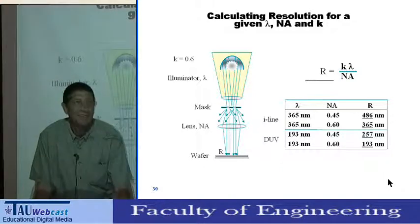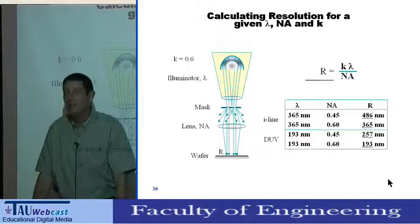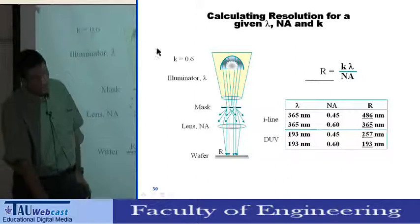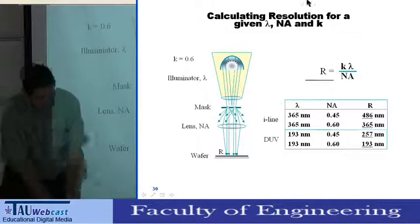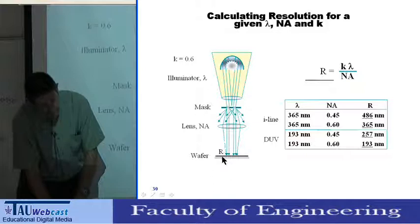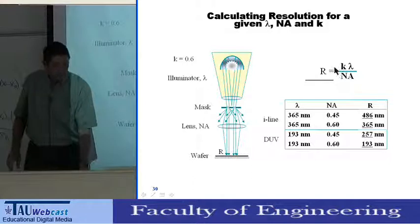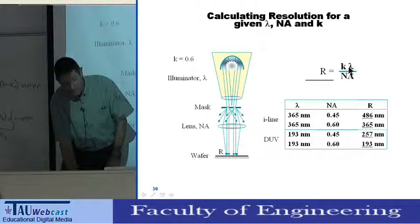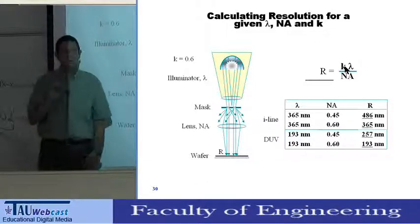Welcome again. We start with the second lecture on nano-micro technology. Last week we started to discuss lithography, and at the end of the lecture I explained to you the calculation and how to calculate resolution. The resolution is defined based on Rayleigh's geometrical optics theorem as proportional to the wavelength, inversely proportional to the numerical aperture, and k is a factor which is about 0.5.